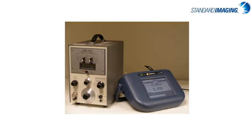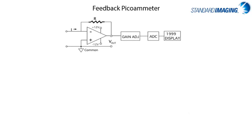Considering that ionization chamber volumes extend from 0.005 cc to over 800 cc, electrometers must be able to handle currents ranging between 0.1 picoamps up to 1 microamp depending on the source. The measurement of charge depends on the accumulation time, typically 15 to 60 seconds. In general, an electrometer is a high-gain negative-feedback operational amplifier with a standard resistor or standard capacitor in the feedback pathway, which measures chamber current and charge respectively. One or both of these preamplifier circuits are contained in all electrometers.